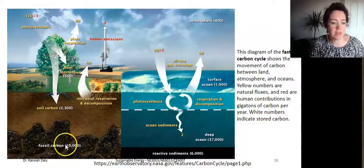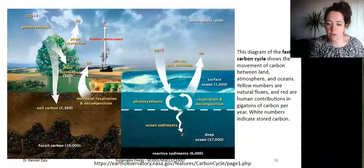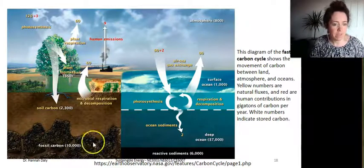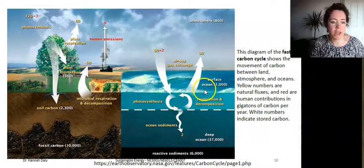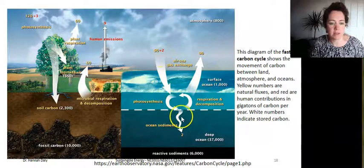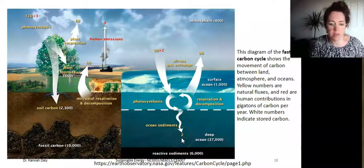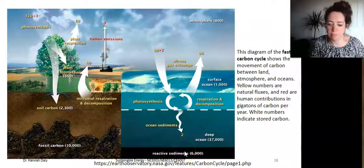The amount of 10,000 indicated on the diagram shows the total amount, I think in trillions of tons. There's also an ocean carbon cycle where there's an exchange of CO2 between the air and the sea, and some depositing of carbon into sediments in the ocean.